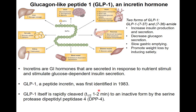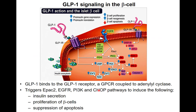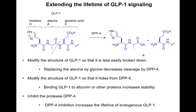If we want to use GLP-1 as a way to reduce diabetic effects, we need to overcome this high instability. GLP-1 binds to its receptor, a G-protein coupled receptor linked to adenylyl cyclase, triggering a complex intracellular signaling cascade. The net result important for diabetes is promotion of insulin secretion, beta cell proliferation, and suppression of beta cell apoptosis.